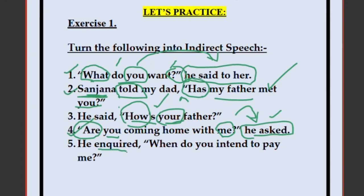Fifth: He enquired, 'When do you intend to pay me?' 'When' is a WH question. So: He enquired — directly use 'when.' 'You' changes to 'he' or 'she.' 'Do intend' is simple present, changing to simple past: did intend. 'Me' changes to 'him,' 'her,' or 'me' — flexible since the addressee is unspecified. Answer: He enquired when he/she did intend to pay him/her.